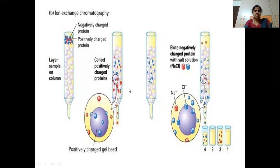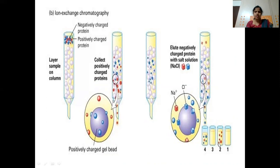An example of protein separation by ion exchange chromatography: proteins can be negatively or positively charged. When added to the column, the positively charged proteins are eluted first, collected in the second fraction (with the first fraction being buffer only). Then, by changing the buffer pH and adding salt solution, the negatively charged proteins are eluted out. This is the main principle — the separation of ions based on charge.